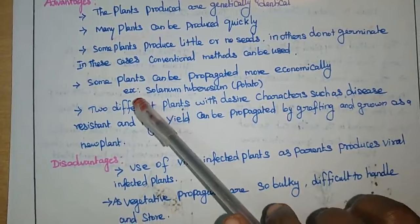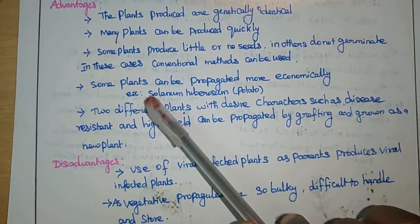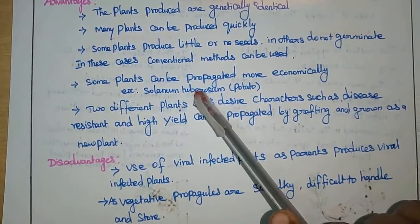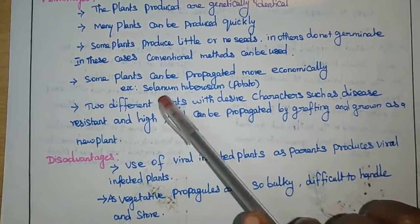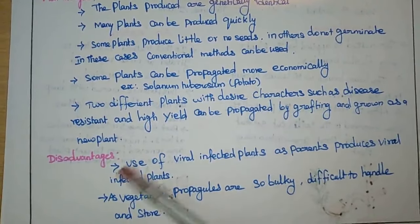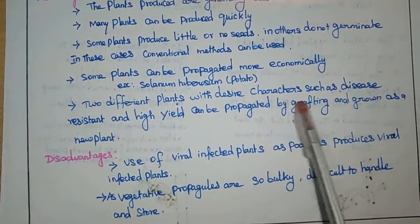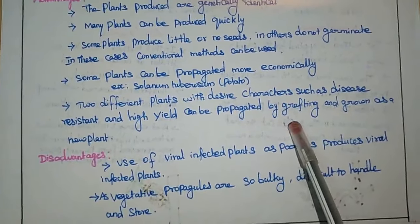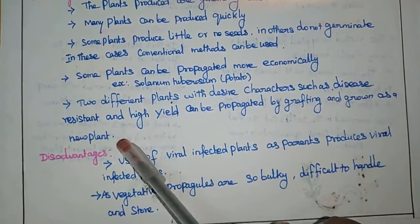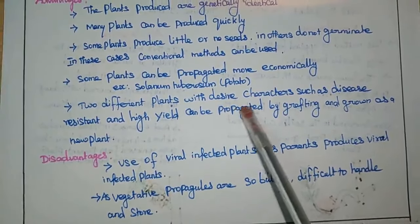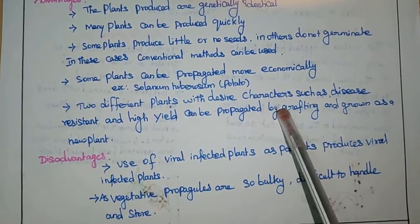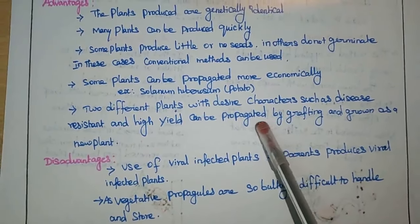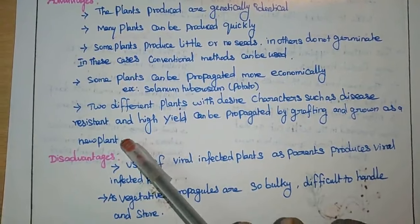Some plants can be propagated more economically. Where there is food scarcity, a particular plant needed to fulfill food needs can be multiplied — for example, Solanum tuberosum (potato). Two plants with desired characters such as disease resistance and high yield can be propagated by grafting, bringing both beneficial characters together in a single plant.